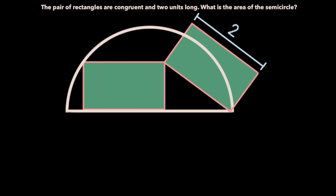In this video, we're going to be taking a look at the following problem. The pair of rectangles are congruent and two units long. What is the area of the semicircle? Pause the video right here if you would like to give this problem a shot, and with that being said, let's jump right into the solution.